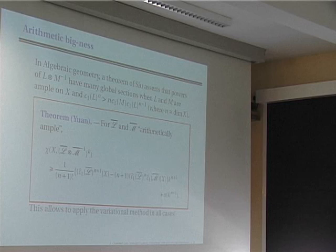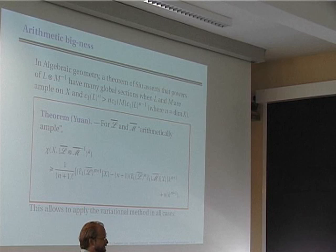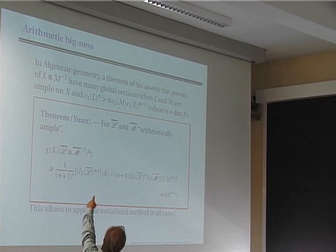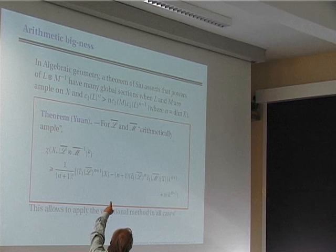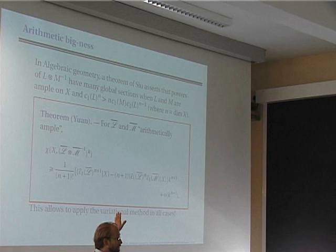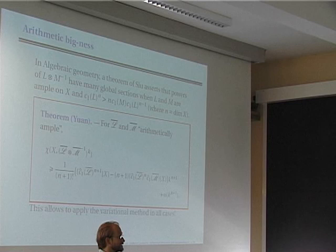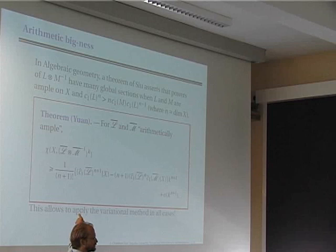Zhang proved that if you take two ample line bundles L and M and look at the difference L̄ ⊗ M̄⁻¹, the power of this line bundle will have many global sections when M is not too big — specifically when c₁(L)^N > N · c₁(M) · c₁(L)^(N-1). This means that for small M, the difference of an ample line bundle and another one will still have many global sections, at least after taking powers. The arithmetic analog is due to Yuan: if you take two arithmetically ample line bundles L̄ and M̄, then chi(X, L̄ ⊗ M̄⁻¹, k) is at least equal to a term that looks exactly like Zhang's second-hand formula.